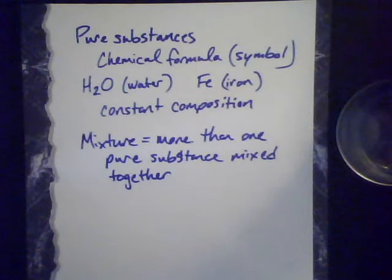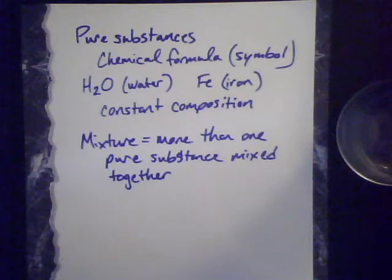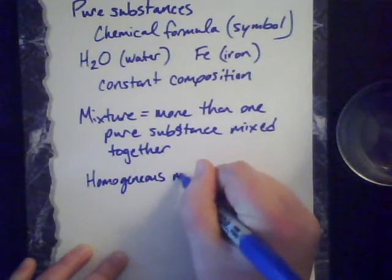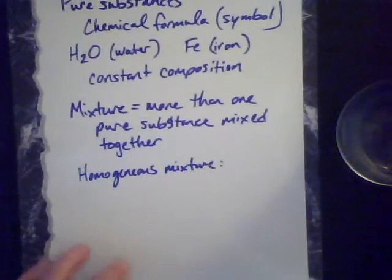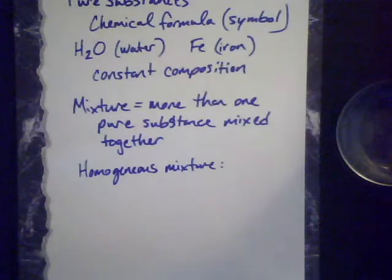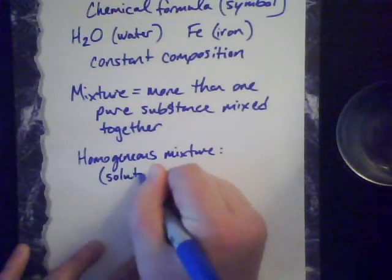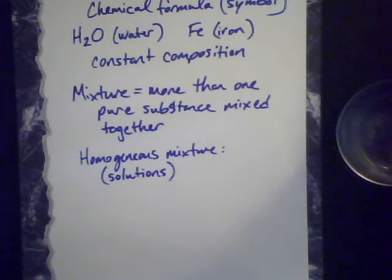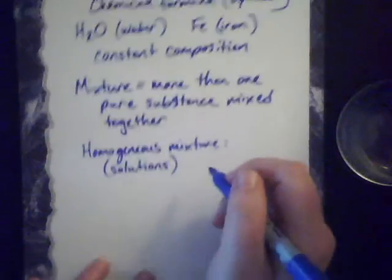More often than not, we as chemists interact with mixtures in the lab. These mixtures can have two formats. We can have things that are really well mixed together — we call those homogeneous mixtures. Homogeneous mixtures are also called solutions. You hear about solutions when you hear about chemists in the lab putting together their solutions. The prefix 'homo' means 'the same,' so a homogeneous mixture looks the same to the naked eye throughout — you can't distinguish one component from the other.